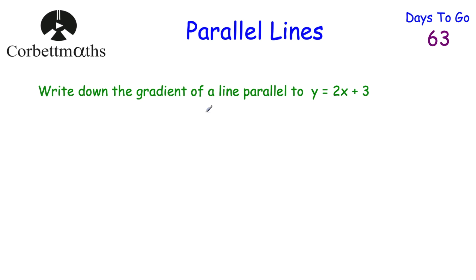The next question says: write down the gradient of a line that is parallel to y equals 2x plus 3. Feel free to press pause and write down the gradient. The gradient of y equals 2x plus 3 is 2, so the gradient of any line parallel to it would also be 2, because it has to have the same gradient. The answer is 2.